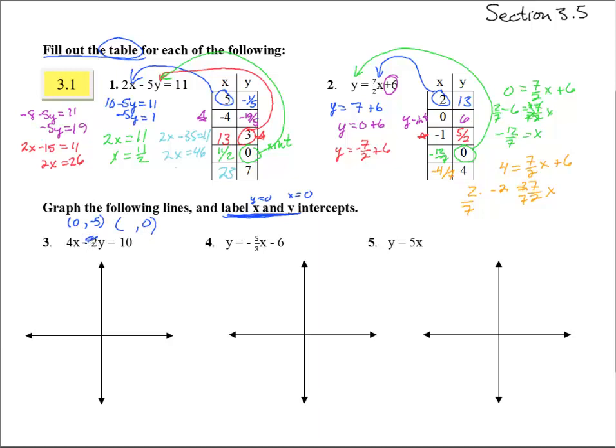So if we stick 0 in there, we have 4x equals 10. Divide both sides by 4, and we get 10/4, which reduces to 5/2. So we have 5/2, 0, which is about 2 and a half right there, and 0, negative 5 is right there.